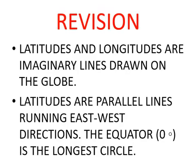Today we are going to revise our Chapter Number 1. First point is: latitudes and longitudes are imaginary lines drawn on the globe. We first studied what is the globe. Globe is a model of Earth which helps us to locate places easily. This globe has no real lines — we imagine them and draw them so that we can easily locate places.